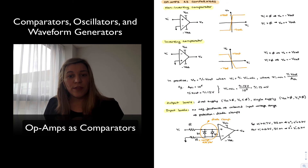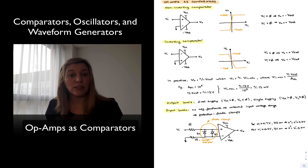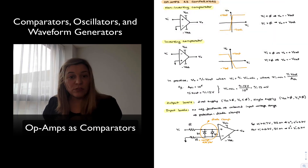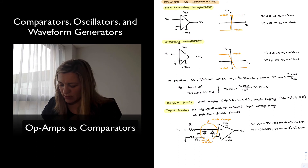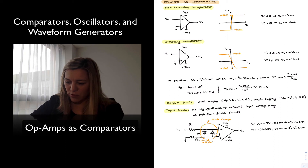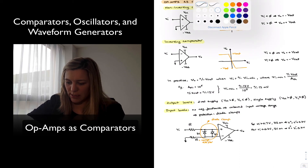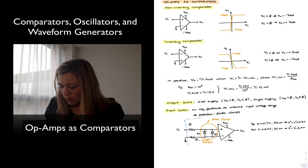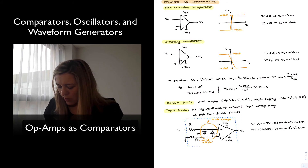If we are dealing with an IC comparator, the diode clamps will typically be included internally within the circuit, providing internal protection diodes to ensure the input voltage range does not exceed the maximum value and damage the device. So if you think of the input stage of an IC comparator, you can approximate it as already containing all of that — we wouldn't need to go the extra mile of protecting the device externally.